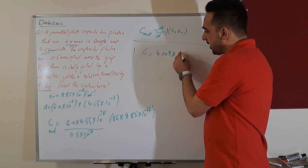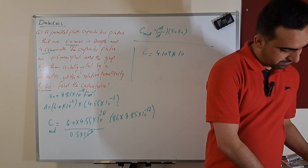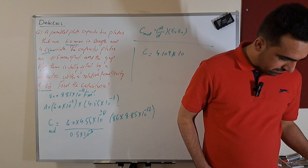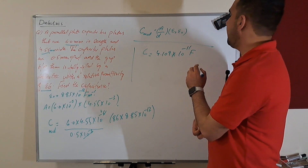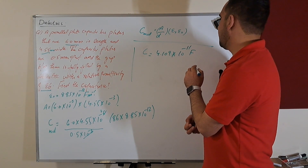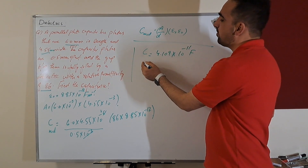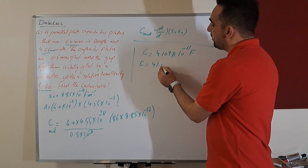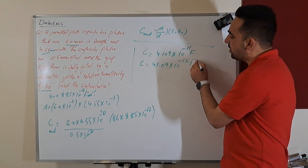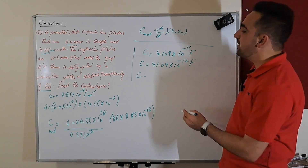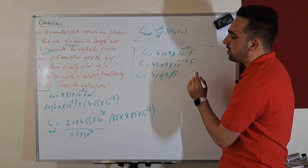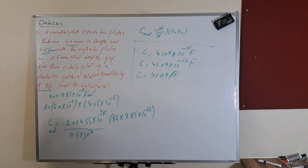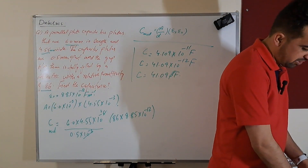The result is 4.109 times 10 to the power minus 11 Farad. Moving the decimal, C equals 41.09 times 10 to the power minus 12 Farad. Since 10 to the power minus 12 is pico, this is a 41.09 picofarad capacitor. That's how we calculate the capacitance of a capacitor with two plates and a dielectric medium.